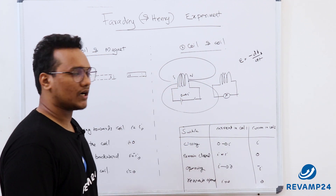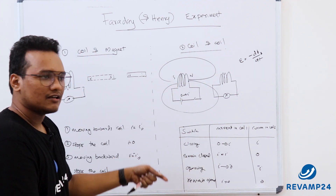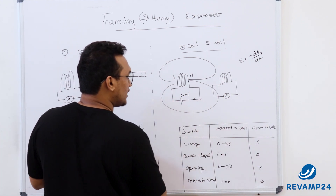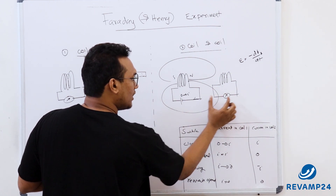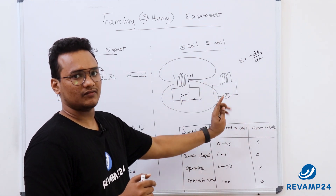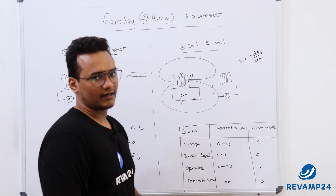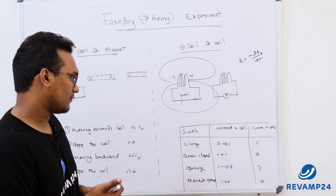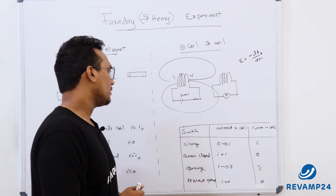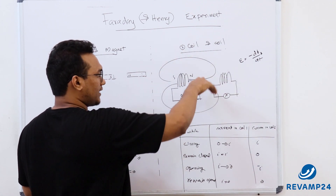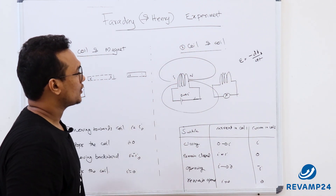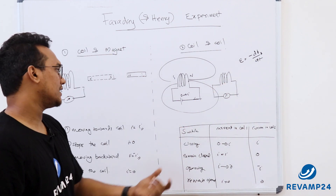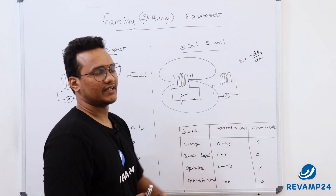After that, when the circuit remains closed, the current doesn't change, so the magnetic flux linked with the second coil is not changing — no induced current. When we open the switch, the magnetic field lines cease one after another, going to zero. This decreases the magnetic flux linkage with the second coil, inducing a current in the opposite direction.